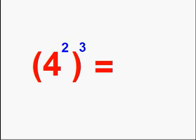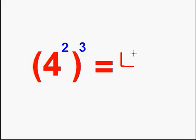Here's an example. If a parenthesis is raised to an exponent, then we're going to multiply the exponents inside the parenthesis by the exponent on the outside of the parenthesis. So here we'll do 3 times 2. We're going to keep the same base, and our new exponent — 3 times 2 — is 6.